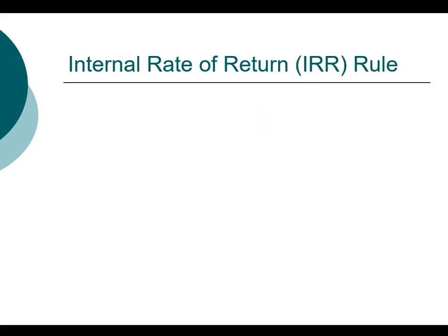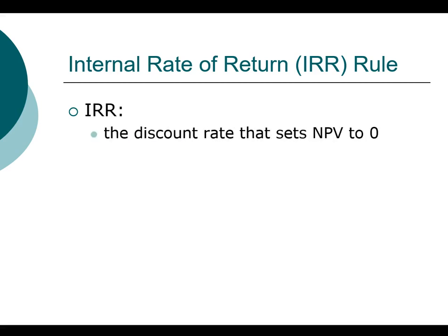So how do we use the internal rate of return rule and what is it? By definition, the internal rate of return is the discount rate that sets the net present value to zero. There's really no calculation per se — the only way you can find the internal rate of return is by trial and error. In the old days, it was very difficult to compute. Today with computing technology, you can easily compute the internal rate of return on your financial calculator or using Excel.